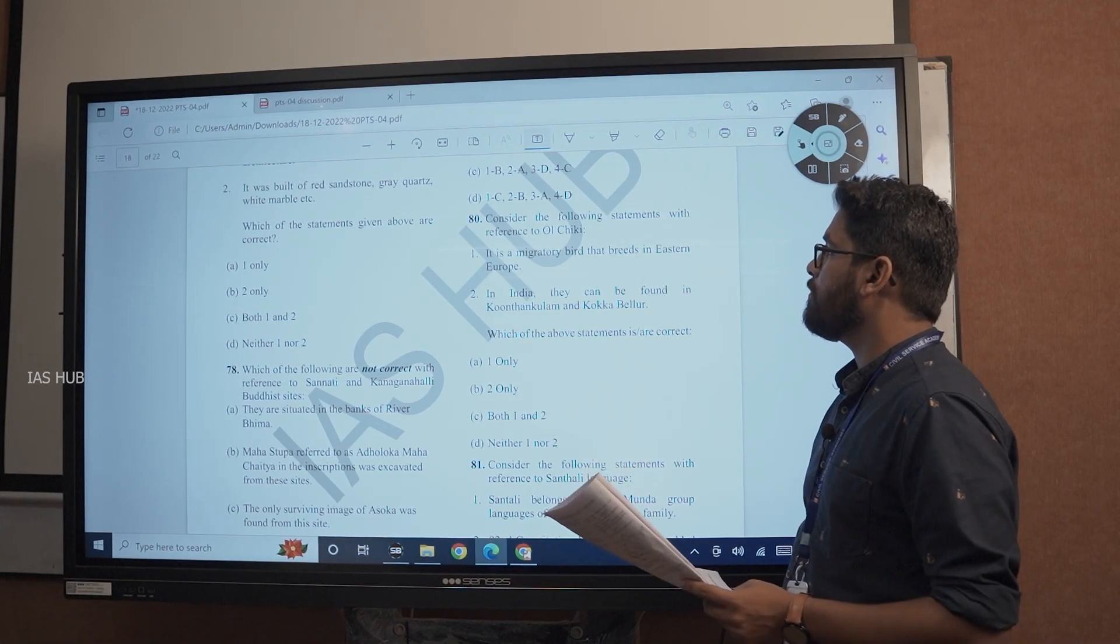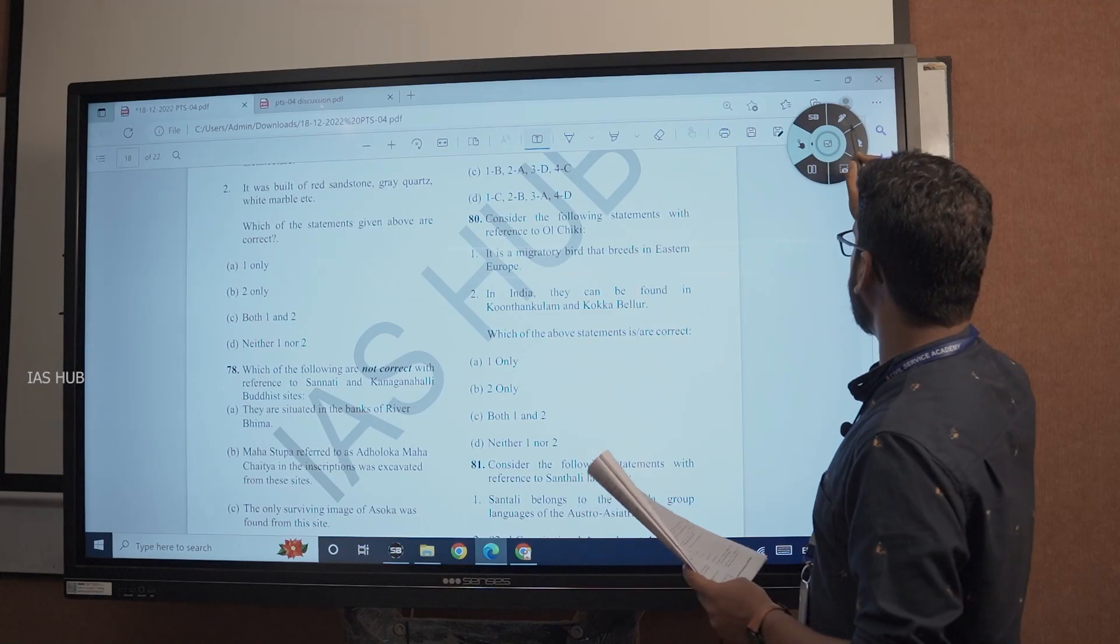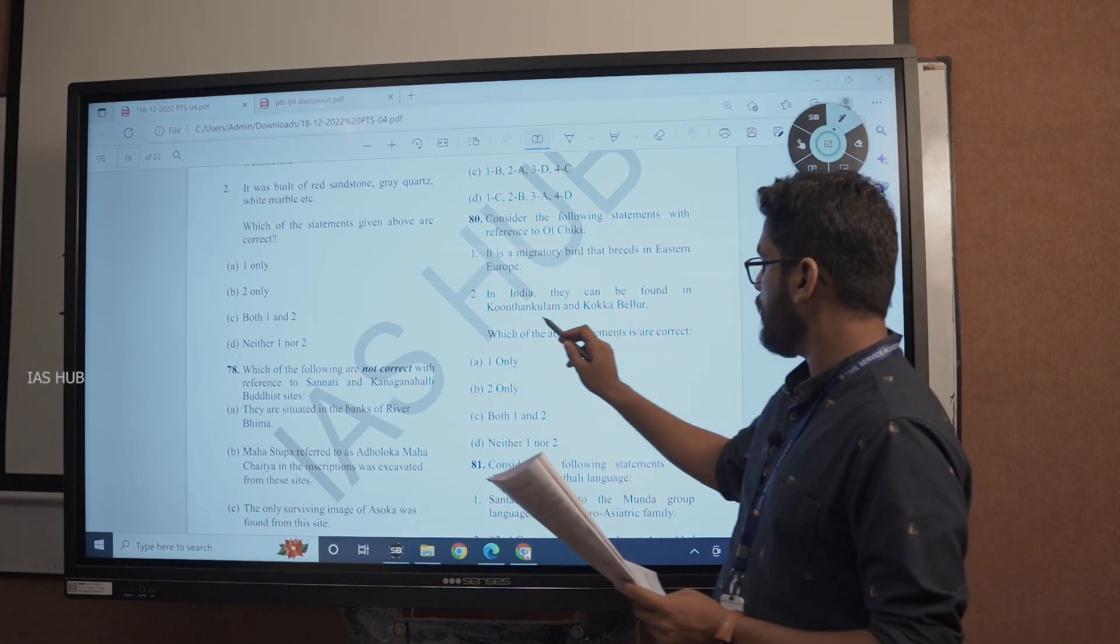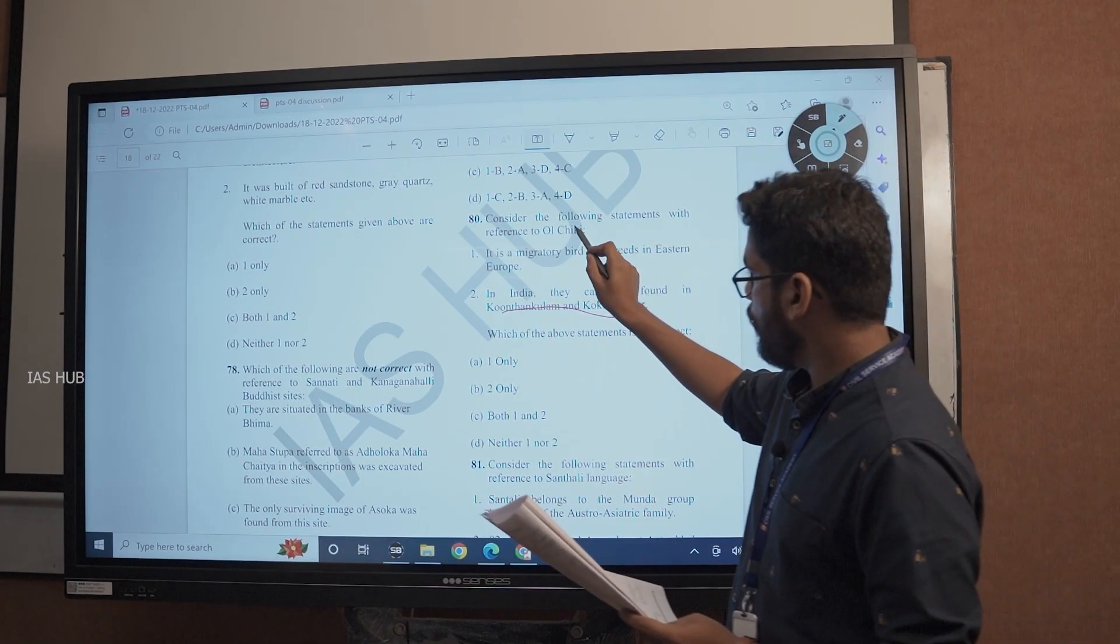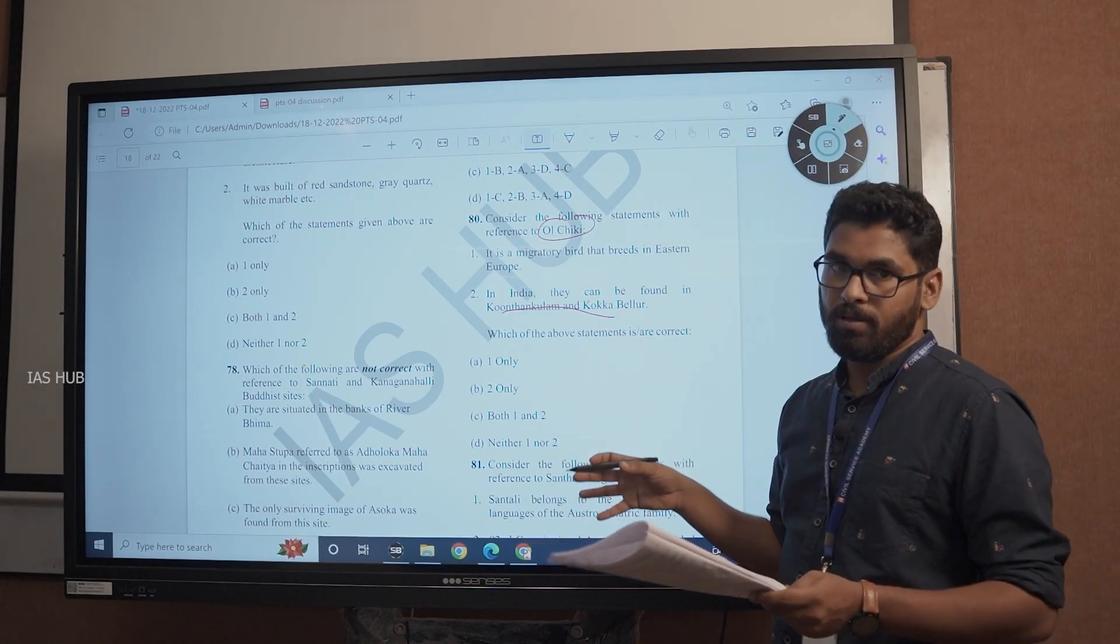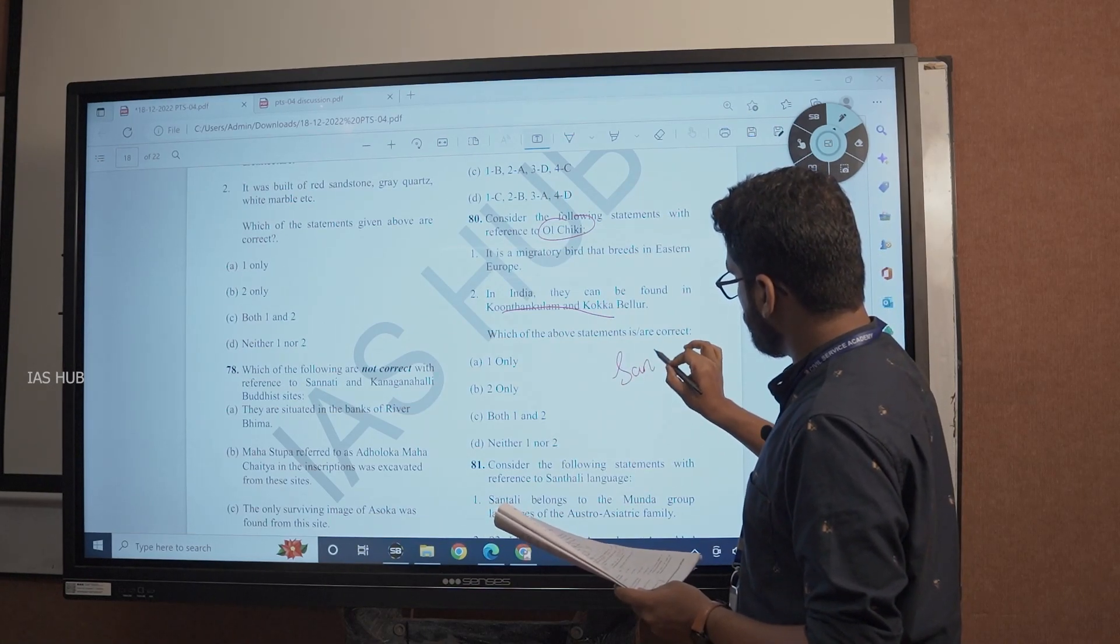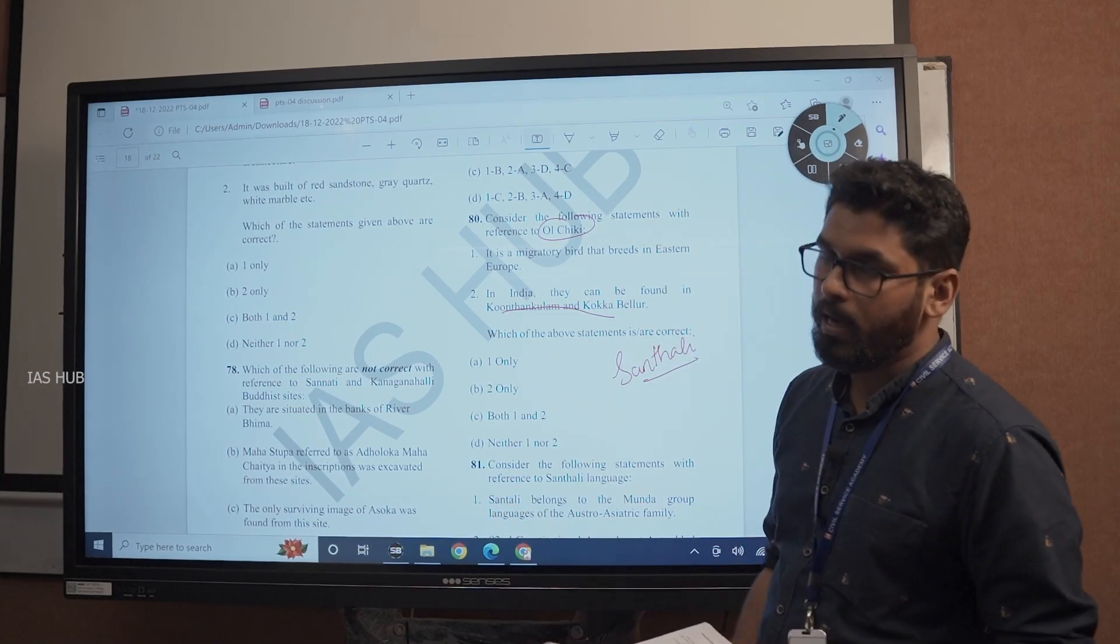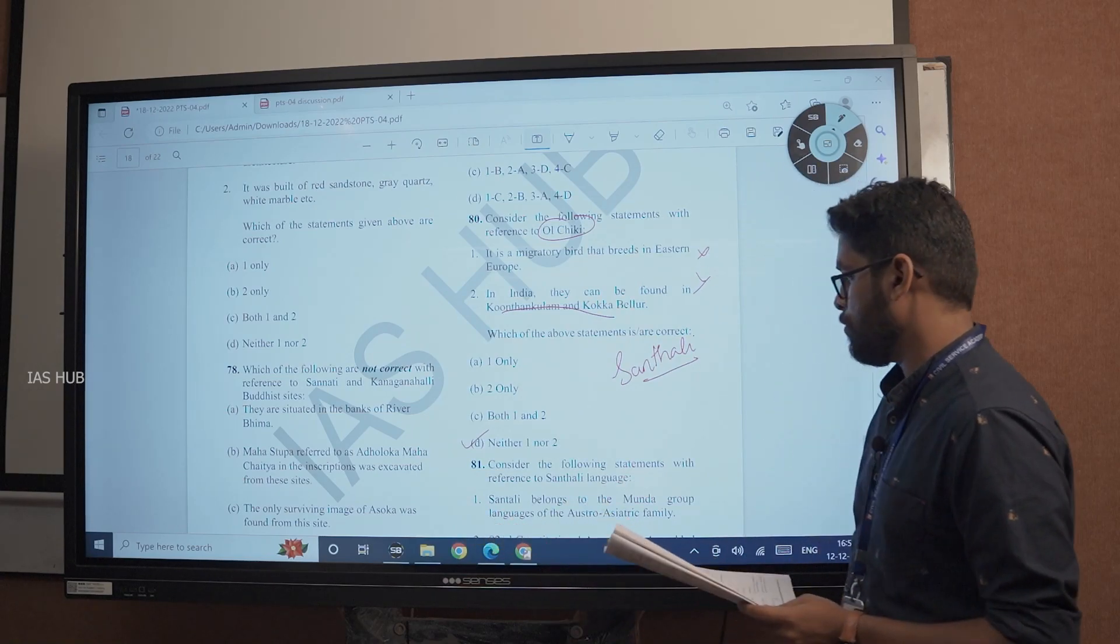Question number 80. Consider the following statement with reference to Old Chikki. It is a migratory bird that breeds in Eastern Europe. In India, they can be found in Kundangulam and Kokkabellur. Old Chikki sounds as if it is a bird, but it is not a bird. It is a script to write the Santhali language. Santhali language is a script. Old Chikki, other bird is not. So both statements are wrong. Answer is D, neither one nor two.